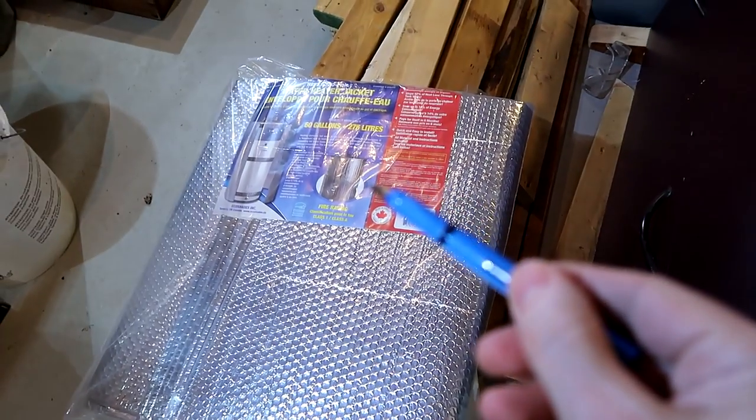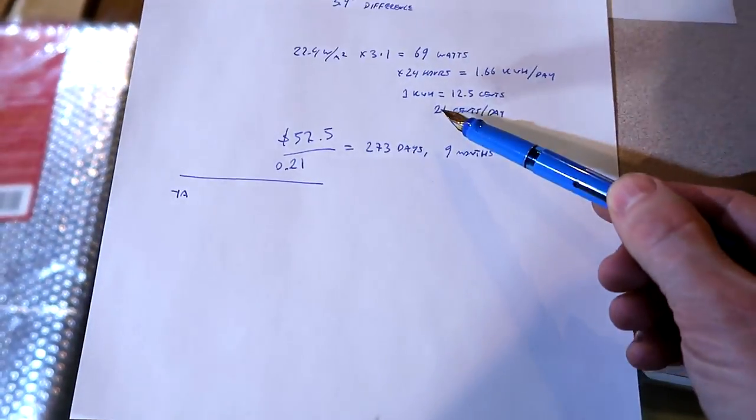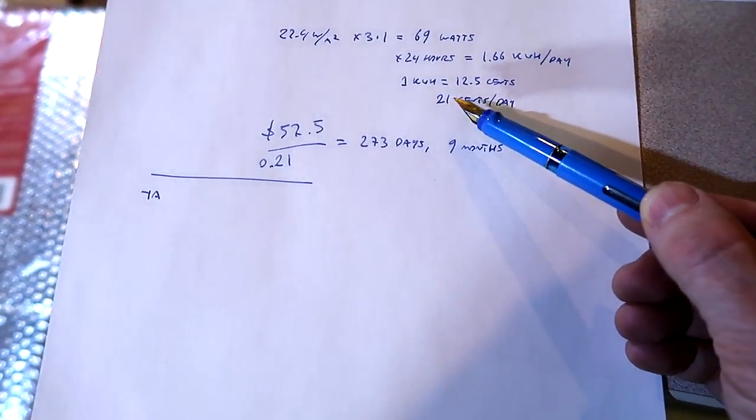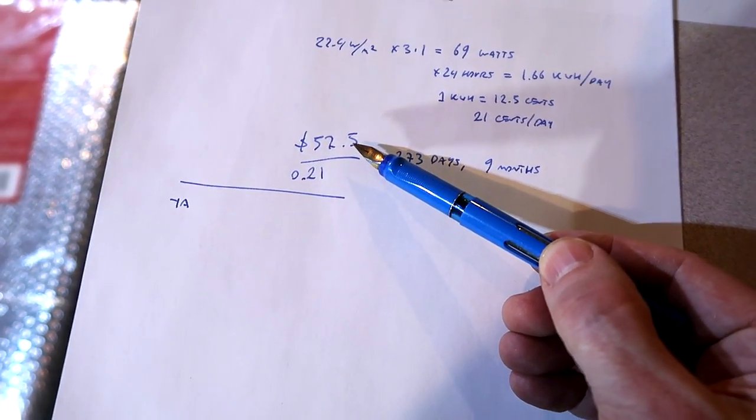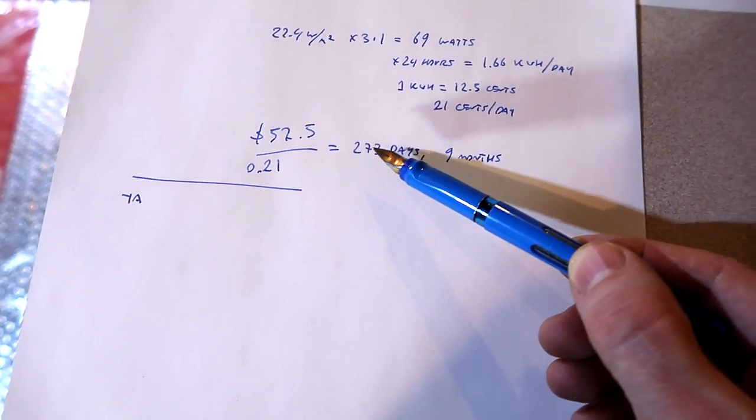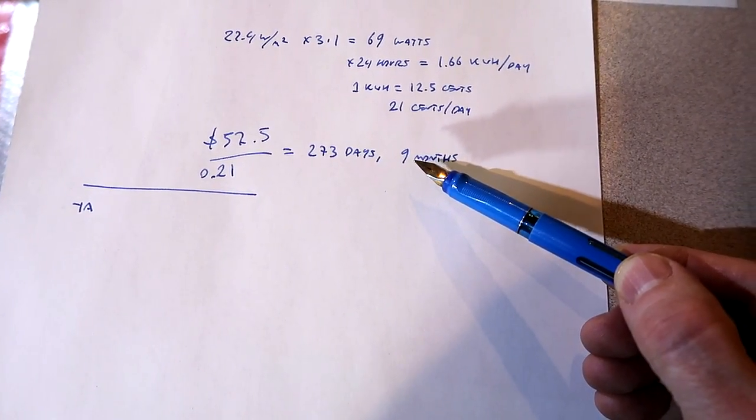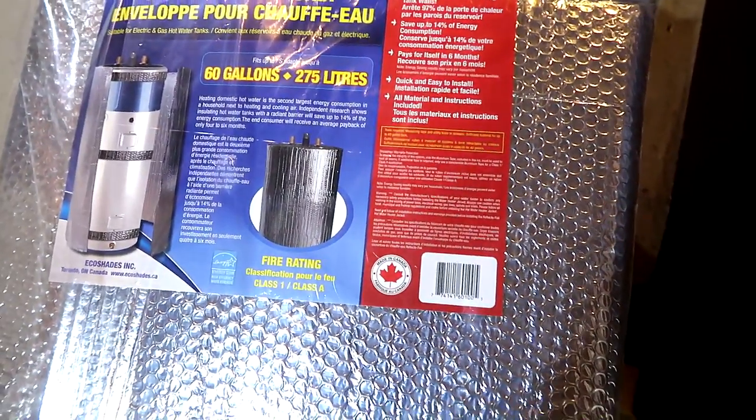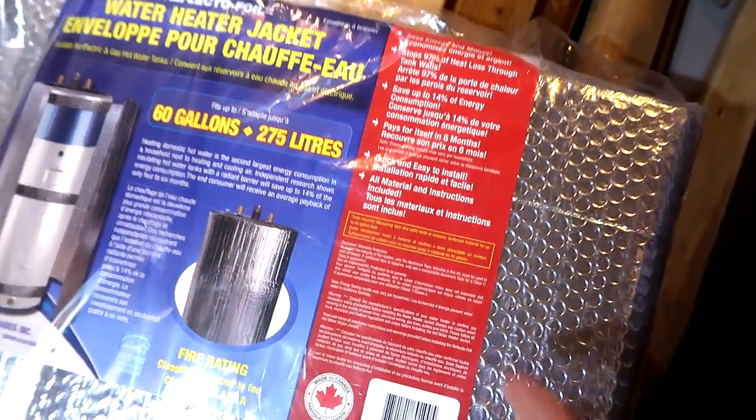Now let's suppose this stuff could stop all of the heat loss. Then we're looking at 21 cents per day, and I paid $57.50 with taxes, divided by 21 cents. That works out to 273 days, or about 9 months for the thing to pay for itself. That is, if this thing could stop all the heat, which I doubt. And even then, more than 6 months. But it would still be pretty good.